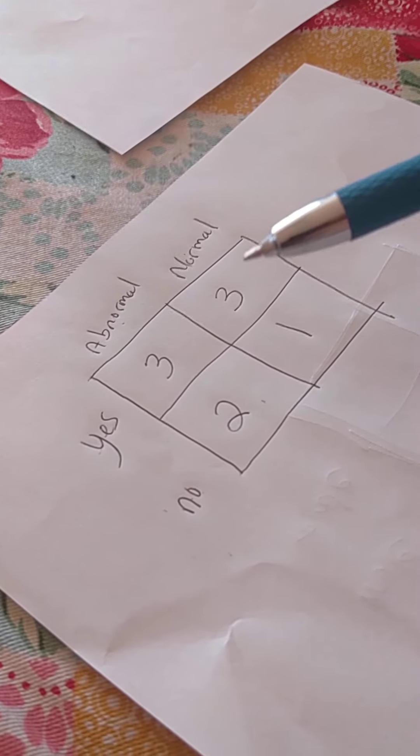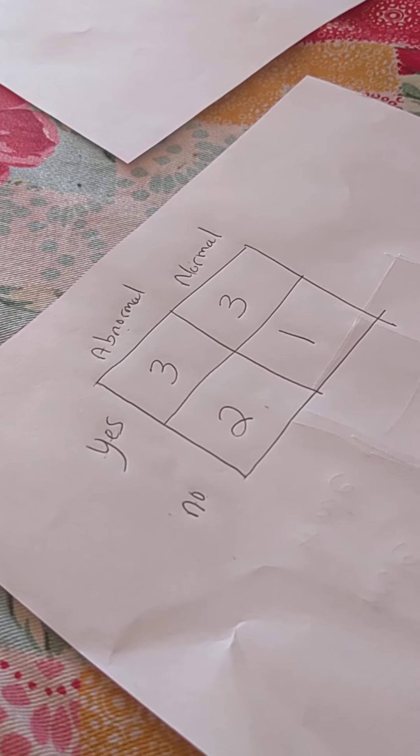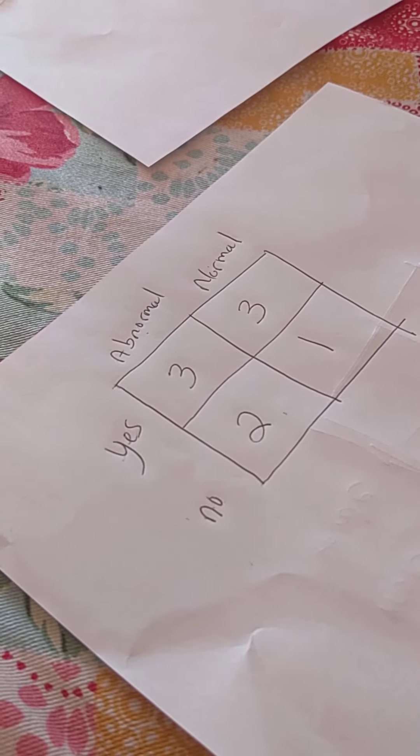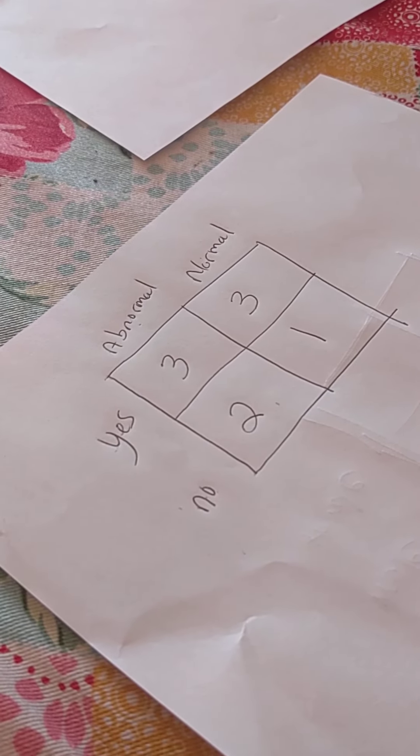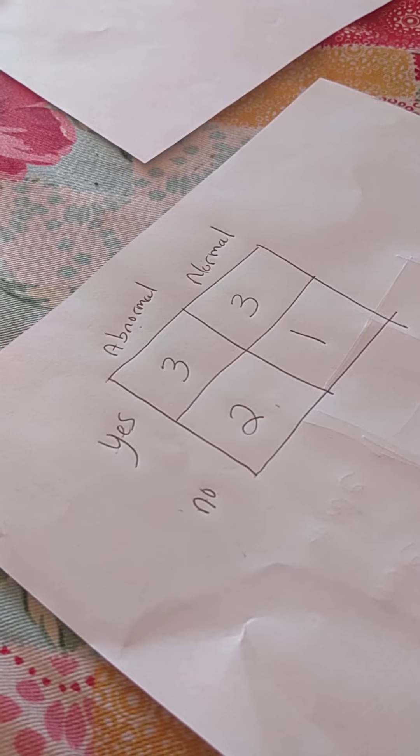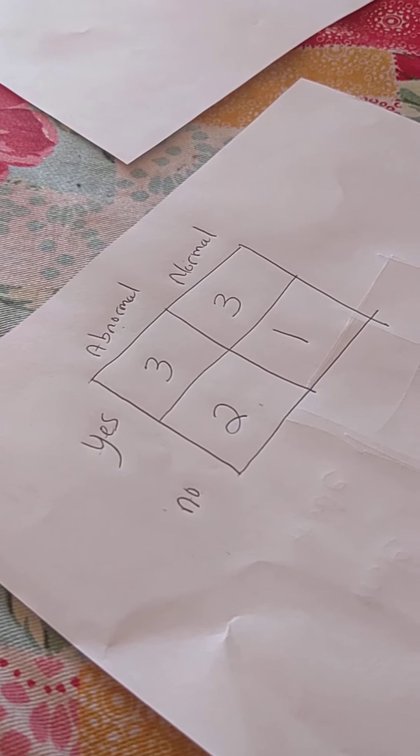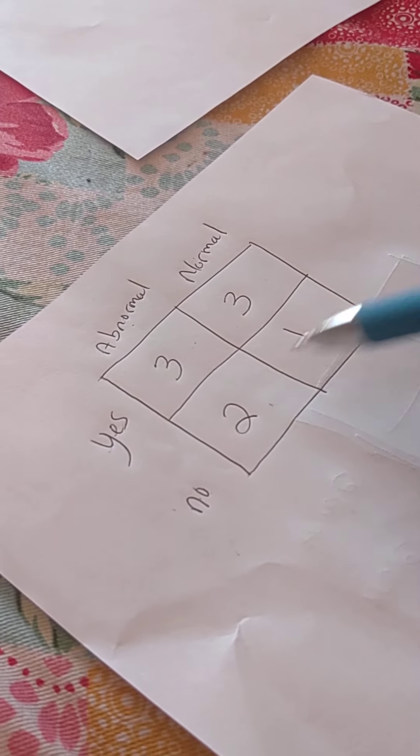Now, according to the chi-square statistic and more specifically this concept of an expected value, there's an expectation. So, there's an expected value for each one of these cells.